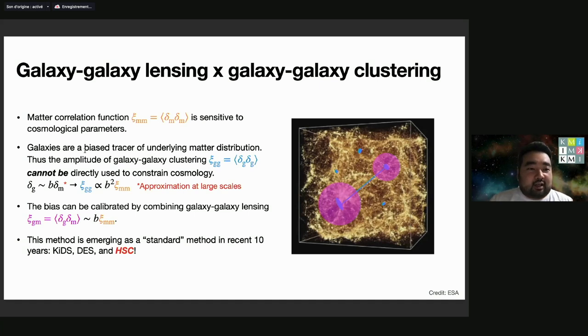But the galaxies are biased tracers of underlying matter distributions, and the amplitude of this quantity cannot be directly used to constrain cosmology. This can be written like this: delta_G is bias times delta_M.